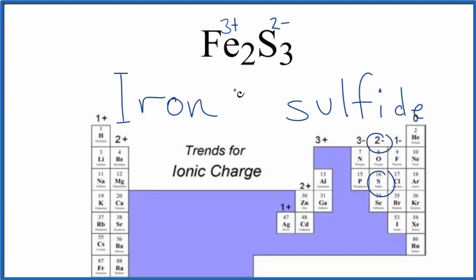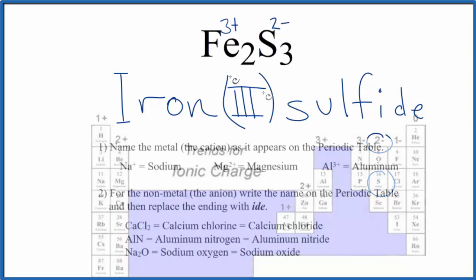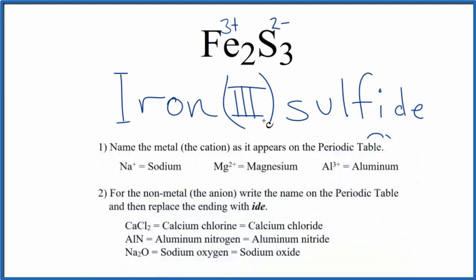Because of that, we're going to write a Roman numeral 3 right between the iron and the sulfide. So this 3 plus, that's why we're writing this Roman numeral here, to show the charge on each one of these irons in Fe2S3. So the name for Fe2S3 is iron 3 sulfide.